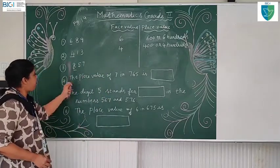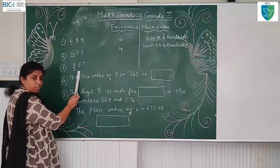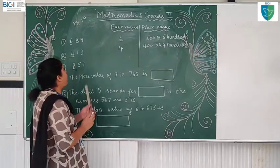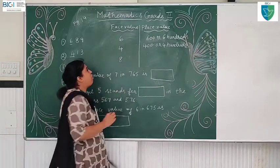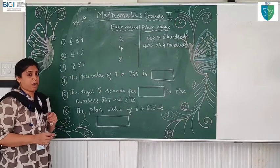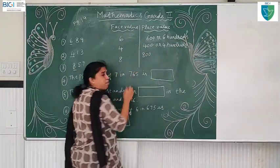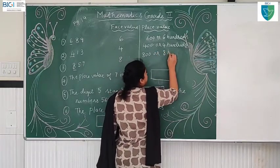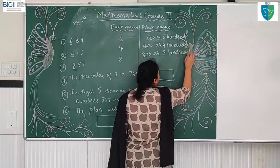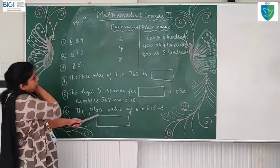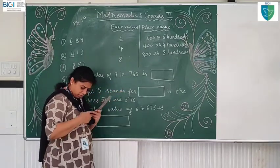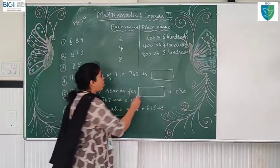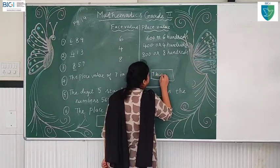857. Here 7 is in the ones place, 5 is in the tens place, 8 is in the hundreds place. Now what is the place value of 8? Eight itself — 8 is in the hundreds place, so 800. The place value of 7 in 765: how many hundreds do we have here? 700.